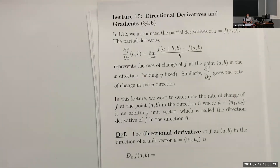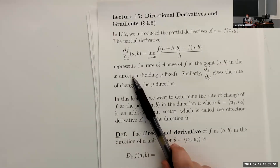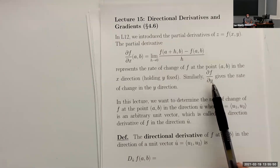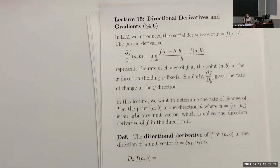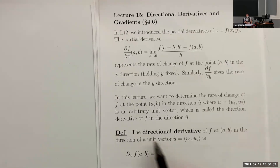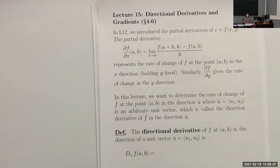We know how to find the rate of change in the x direction — that's the x partial derivative — and we know how to do it in the y direction. But what if we're moving along our surface in a direction that's not just x or not just y? What if it's a little bit of both? This is where the directional derivative comes in, and this is also where we're going to start using a lot of what we learned with vectors — in particular, the dot product and unit vectors. We want them to be magnitude one so they don't change the size of the derivative.